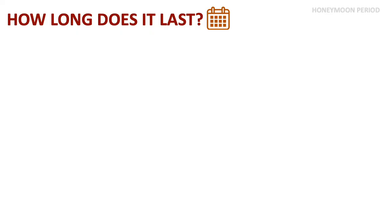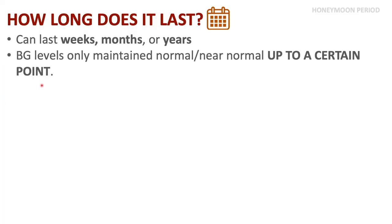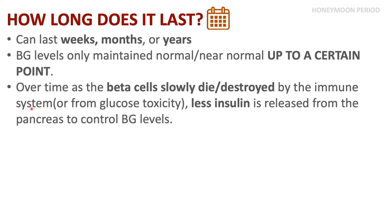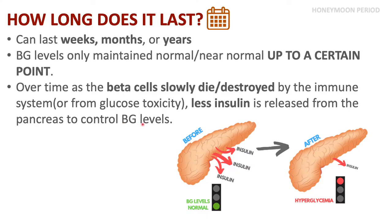How long does the honeymoon period last? It can vary — it can be weeks, months, or even years. Blood glucose levels will only be maintained normal or near-normal up to a certain point, because over time as the beta cells slowly die or are destroyed by the immune system or from glucotoxicity, this leads to less and less insulin being released from the pancreas.